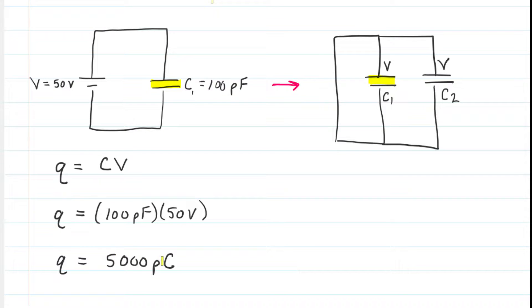Now, remember that 5,000 picocoulombs of charge that was stored. Well, the key to this question is to understand that that 5,000 picocoulombs of charge is conserved. So the total amount of charge in the new circuit is still 5,000 picocoulombs. This is the conservation of charge. That is the key, as we will see, to solving this question.